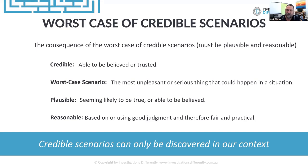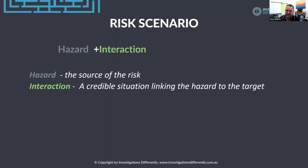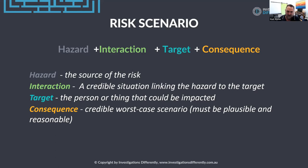The scenario must be credible — and the consequence of what happened must also be credible. When you're coming up with risk scenarios, give the group that example of what credible looks like. Here's how I write a risk scenario: hazard, interaction, target, and consequence. It's the interaction between the hazard and the target, and the credible worst case consequence of that interaction. If it doesn't have those four things, it's not a risk.